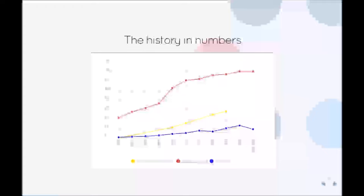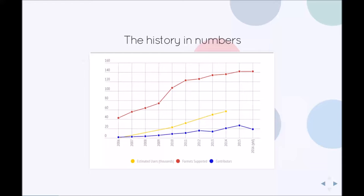For a more quantitative look at the history, you can see in red at the top how the number of supported formats has increased from 43 in 2006 to 142 today. The plateau here reflects our current emphasis on more structural improvements over adding new file formats, and less a decline in the number of new formats in the wild. An estimate of the number of users is in yellow in the middle, which shows fairly steady growth for the years in which we have reliable data, though unfortunately we don't currently have complete estimates for 2015 and 2016.